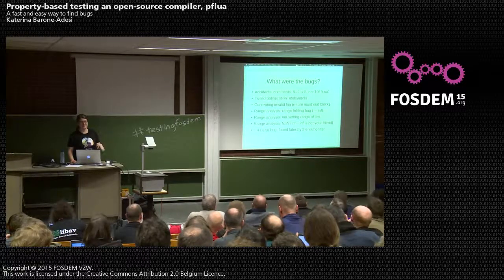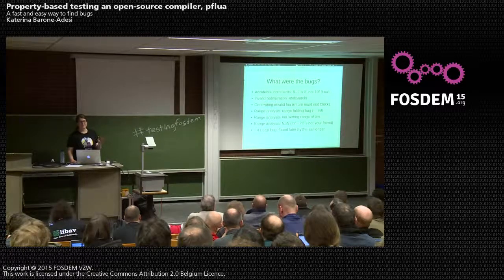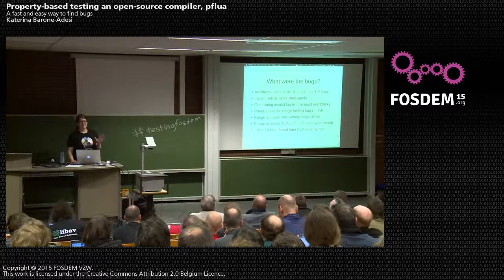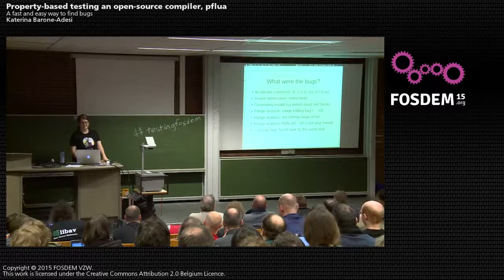The seventh bug, which we only looked into properly later, turned out to be a bug in LuaJIT itself — it was not doing exactly the right thing with random numbers, which was giving us problems with test case repeatability. We probably wouldn't have found that without these tests.